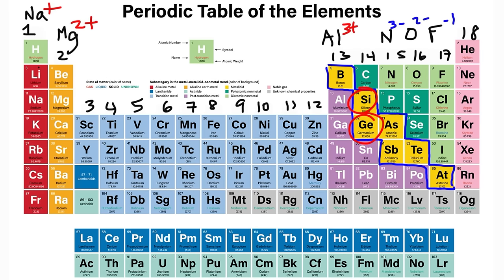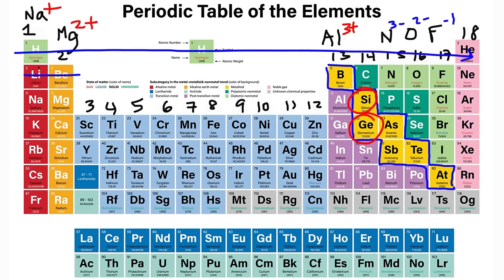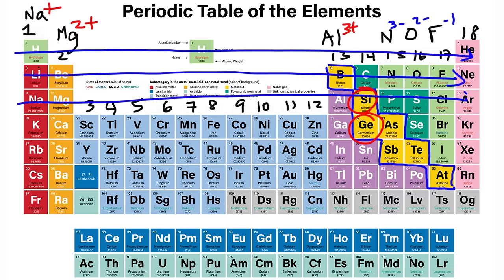The vertical columns are called groups. The horizontal rows are called periods — so this is period one, period two, period three, and so forth.